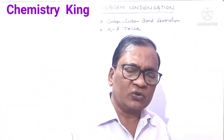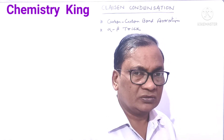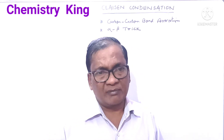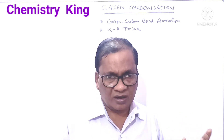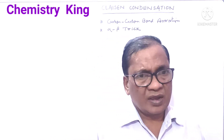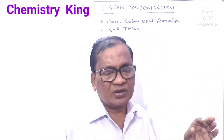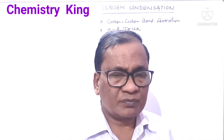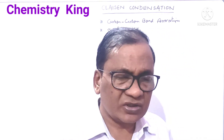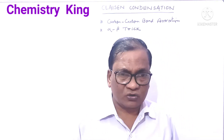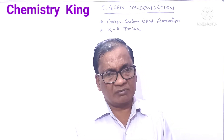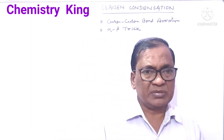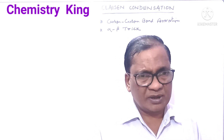Claisen Condensation is similar to Aldol Condensation. In Aldol Condensation, we take carbonyl compounds having at least one alpha hydrogen. And in Claisen Condensation, we take ester having alpha hydrogen. In the product of Aldol Condensation, we get beta-hydroxy aldehyde or beta-hydroxy ketone. And in Claisen Condensation, we get beta-keto ester. So these two are very much similar.